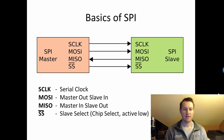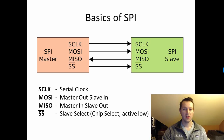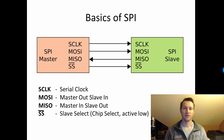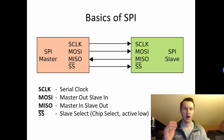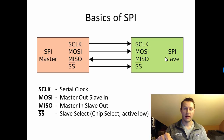MOSI stands for master out, slave in. If you look at the direction of the arrow, it goes from the master to the slave — that's a data line going from the master to the slave. MISO is master in, slave out. I actually like the naming on SPI because instead of just TX/RX, MOSI and MISO are more descriptive. So if the master wanted to get data off of an ADC, it would be reading the MISO line. If it wanted to write data to an EPROM, some sort of programmable memory, you would be writing it over the MOSI line.